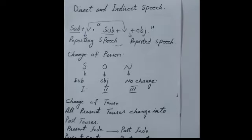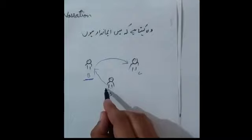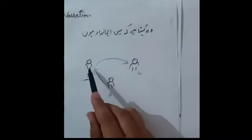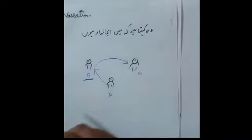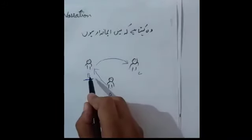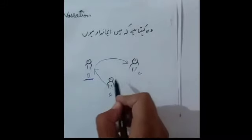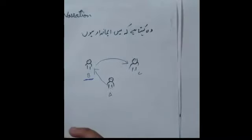When we talk about conveying someone's words, it is called narration. Narration has different parts, which we can label as A, B, and C. When A and B are combined, it is called narration.